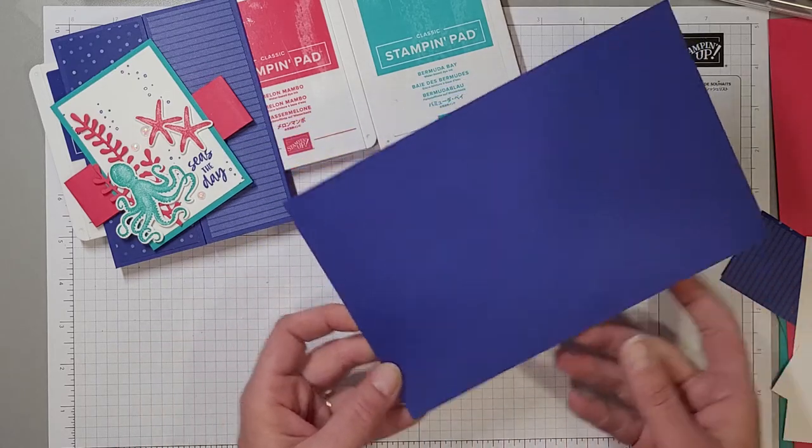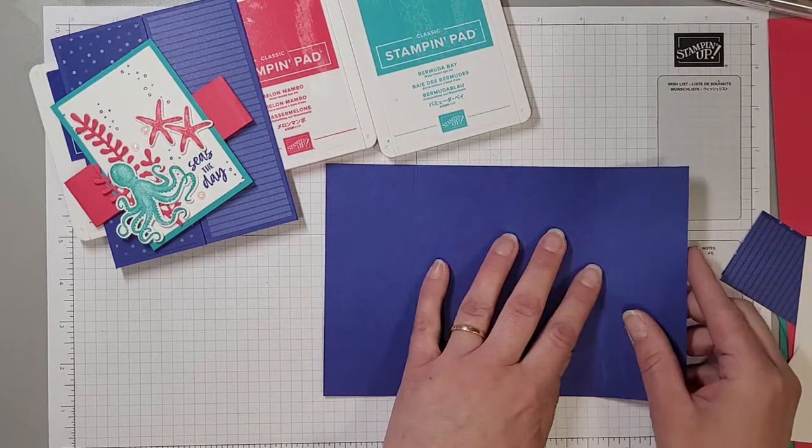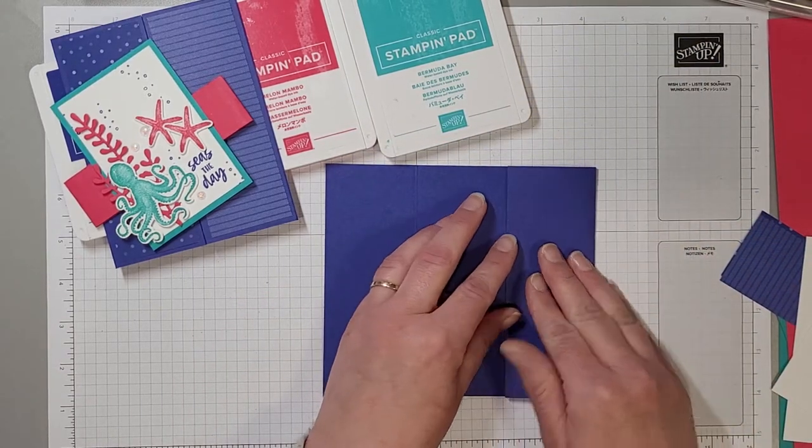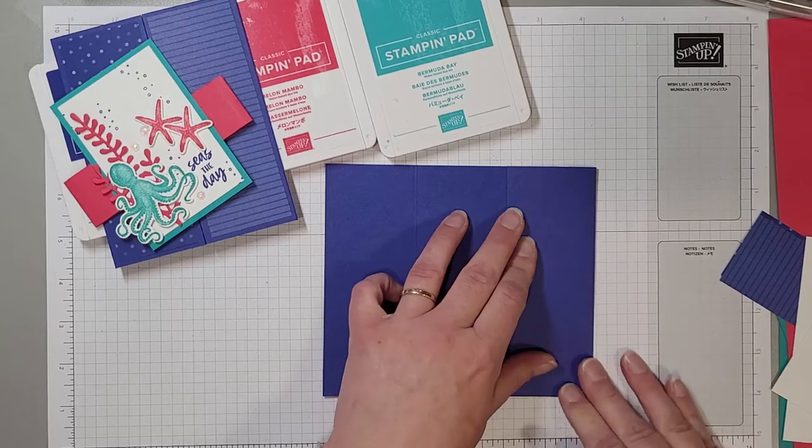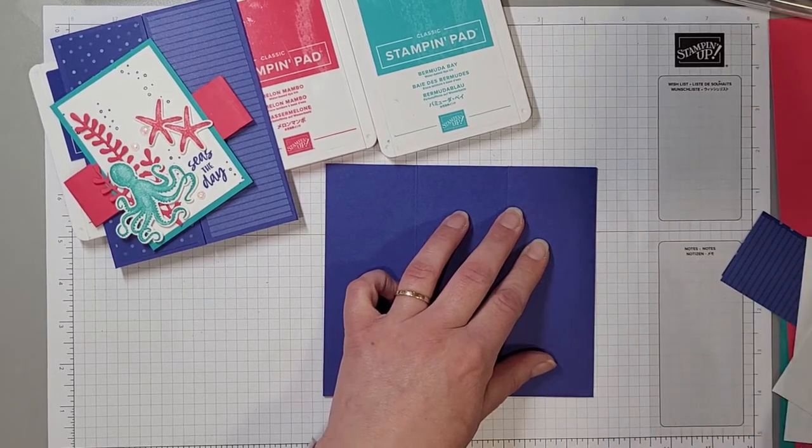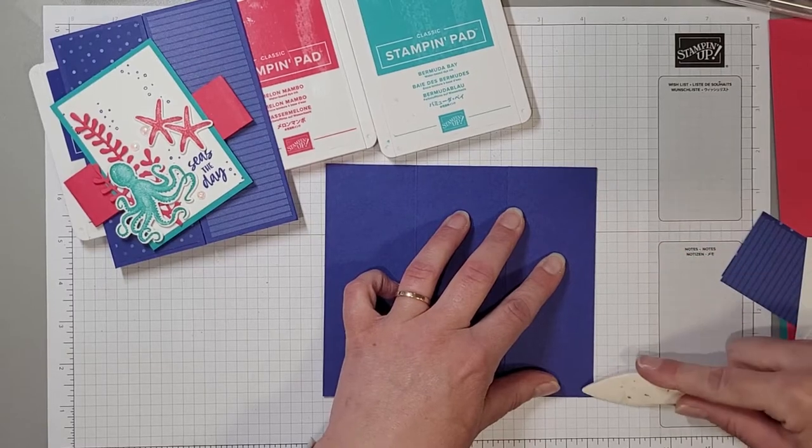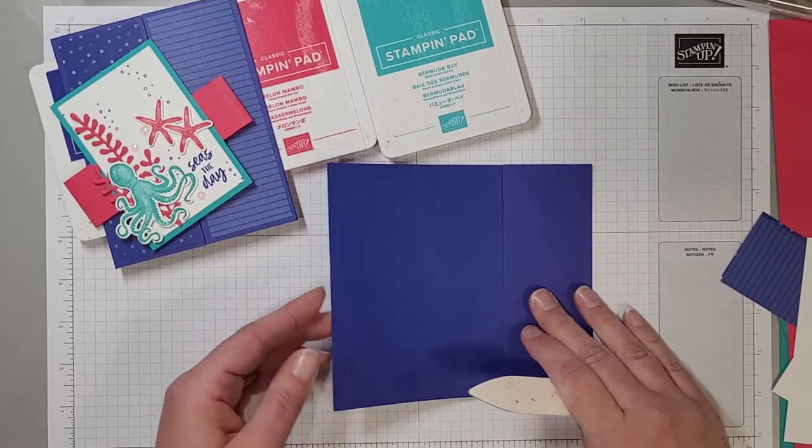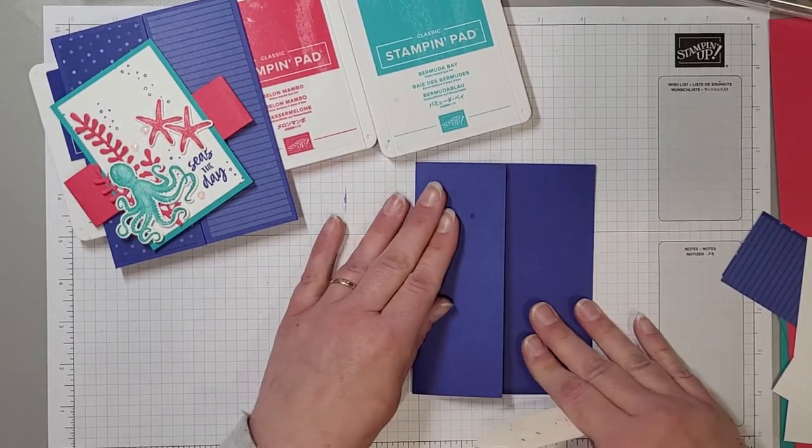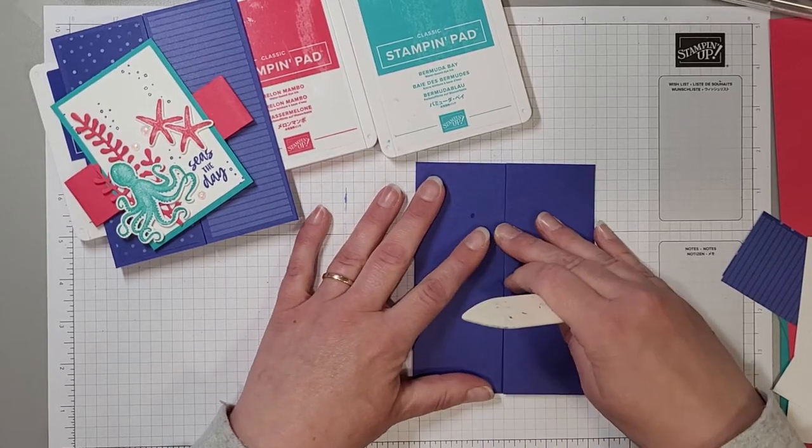So what we want to do is score or fold on those score lines, just making sure that they line up. We'll take our bone folder and we'll just burnish these edges. It should meet nicely in the center. Perfect.